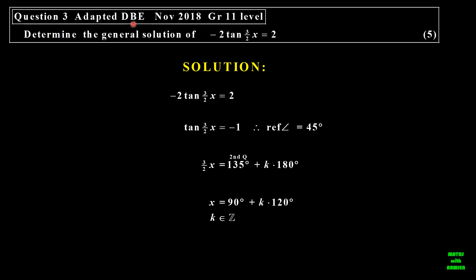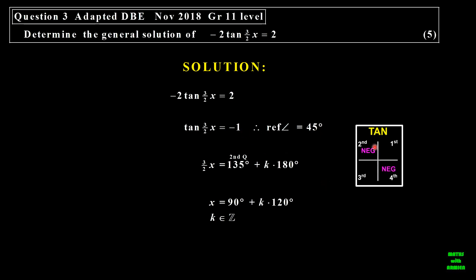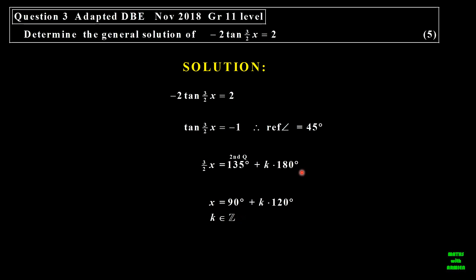Let's look at the next question. We want to find the general solution of negative 2 tan of one and a half x equal to 2. We can simplify this by transposing the negative 2, so tan of one and a half x is equal to negative 1. We find the reference angle, and that's 45 degrees. Where is tangent negative? Tangent is negative in the second and fourth quadrant. Because of tangent, we only consider the first two quadrants. So let's take the second quadrant: 180 minus 45 degrees is equal to 135 degrees. Then to find x, we divide everything by one and a half, therefore x is equal to 90 plus also the 180 divided by one and a half, that is equal to k times 120. And k is an element of the integers.